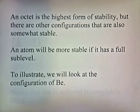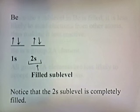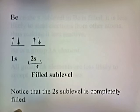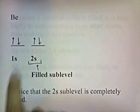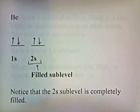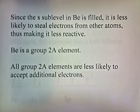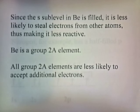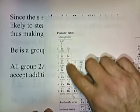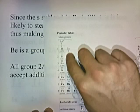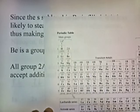To illustrate, let's look at the configuration of beryllium. The outermost electrons are in the second energy level, and there are two electrons here. Each orbital can hold two electrons, so this orbital is completely filled — it has two electrons in it, so that sublevel is completely filled. Since the S sublevel in beryllium is filled, it is less likely to steal electrons from other atoms, thus making it less reactive. Beryllium is a group 2A element. All group 2A elements are less likely to accept additional electrons. All these elements have two electrons in their S sublevel, so all of them have a filled S sublevel on the outside, which stabilizes them a little bit and makes them reluctant to accept other electrons.